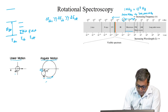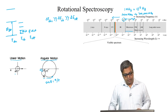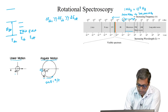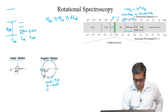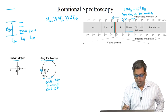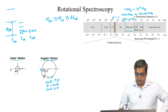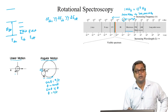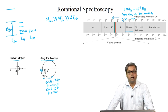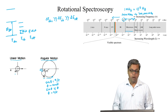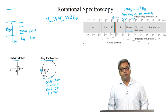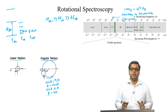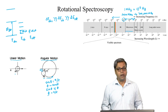We can write sin theta equals x by r. Because we have considered this displacement to be very small, theta is also very small, and because theta is small, we can write sin theta is approximately equal to theta. Therefore, we can write theta equals x by r. Here r is a constant as the particle is rotating in a circle of constant radius; however, x is a variable and so is theta. Thus, we can think the distance in linear motion is analogous to the angle swept out by the particle in angular or rotational motion.